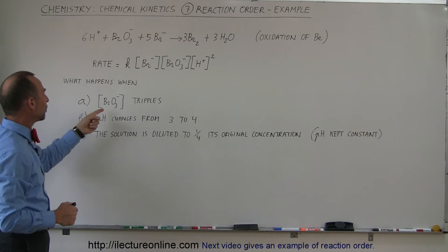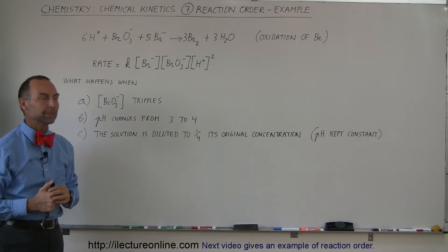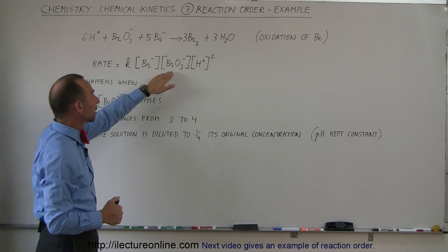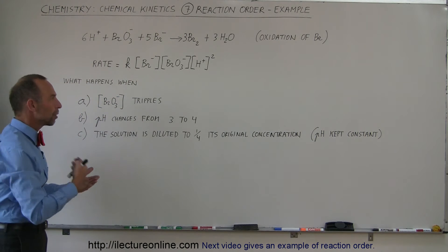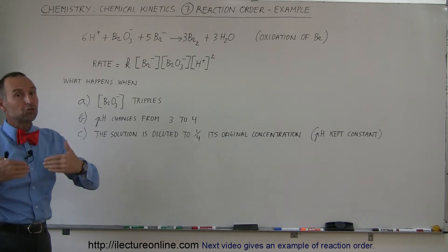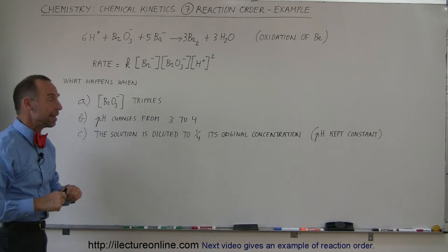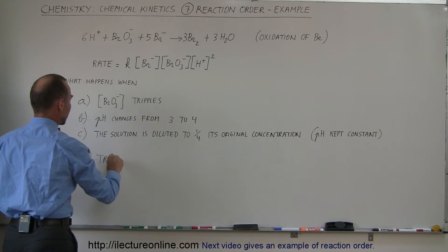All right, so what happens when we do these three things? First of all, what happens when we triple the concentration of the bromate ion? Well, since the reaction is linearly related to the concentration of the bromate ion, if you then triple the concentration, you therefore triple the reaction, of course, assuming that everything else is left the same. So for part A, that simply means we therefore triple the reaction.